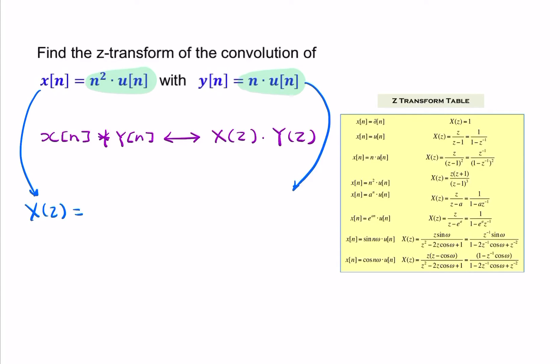In the table, conveniently, we have exactly that. We have n-squared u of n. So X of Z would simply be Z times (Z plus 1) over (Z minus 1) cubed. I got that from there.